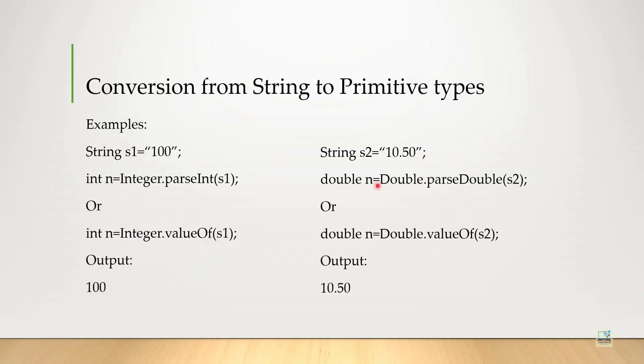Another example, string s2 equal to "10.50". double n equal to double dot parseDouble s2. The variable s2 is containing 10.50 that is double value decimal number. Then, we are passing that value to the function, parseDouble which will convert that value to double.